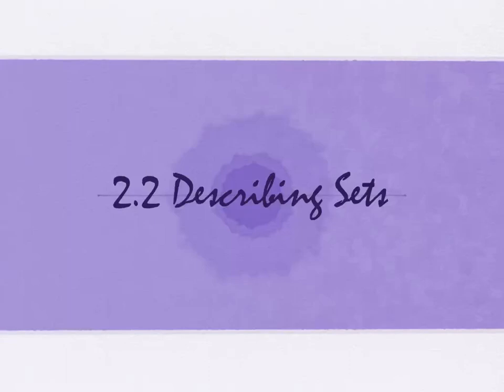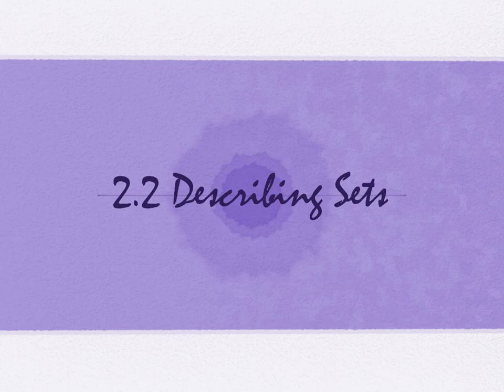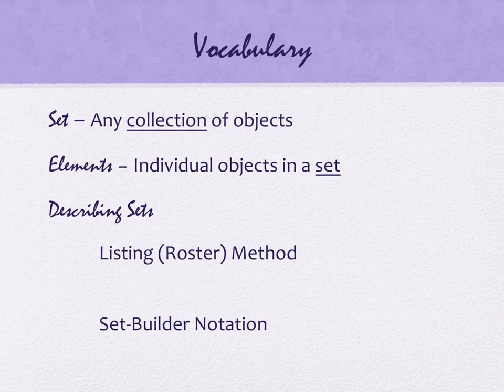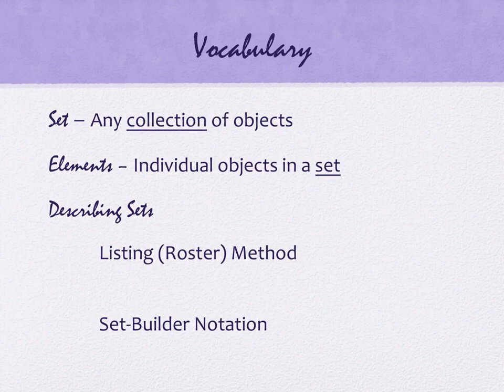All right, today we're looking at section 2.2. For those of you who have had contemporary math, a lot of this is going to look like things you've seen before. There's a little bit of variation in our notation. We need a little bit of vocabulary so that we're all using the same terms to mean the same thing. For starters, we're going to define what we mean by a set. A set is simply any collection of objects, and elements are those objects.